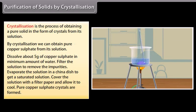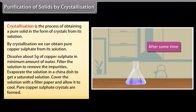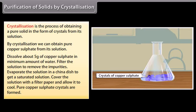Dissolve about 5 grams of copper sulfate in minimum amount of water. Filter the solution to remove the impurities. Evaporate the solution in a china dish to get a saturated solution. Cover the solution with a filter paper and allow it to cool. You will see pure copper sulfate crystals are formed.